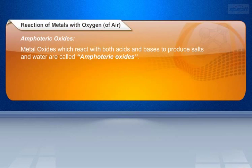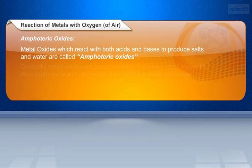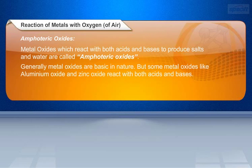Now we will learn about Amphoteric Oxides. Metal oxides which react with both acids and bases to produce salts and water are called Amphoteric Oxides. Generally, metal oxides are basic in nature, but some metal oxides react with both acids and bases. Examples of Amphoteric Oxides are Aluminium Oxide and Zinc Oxide.